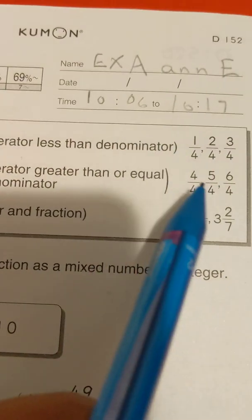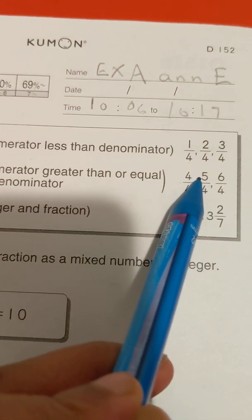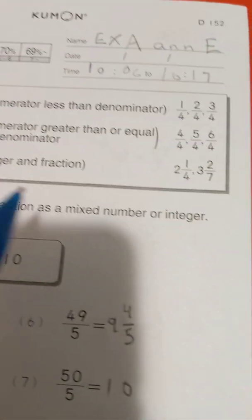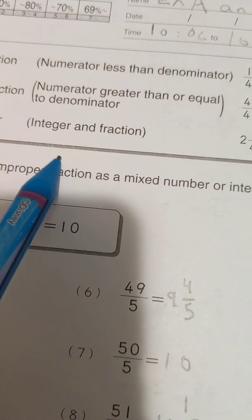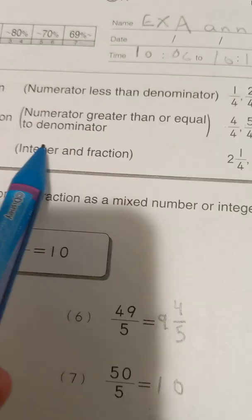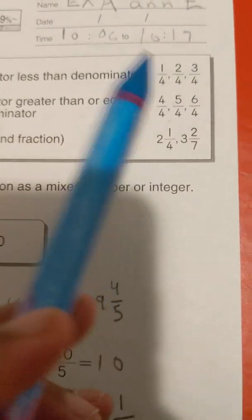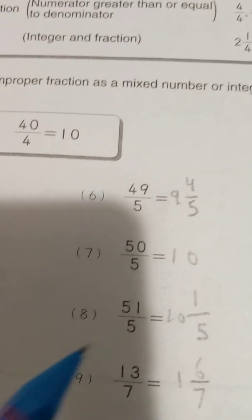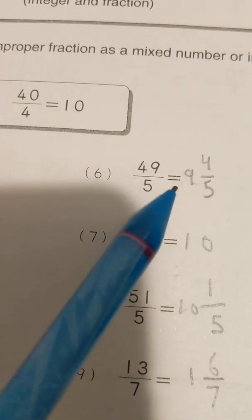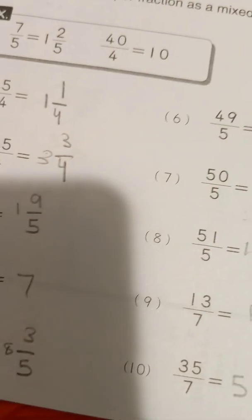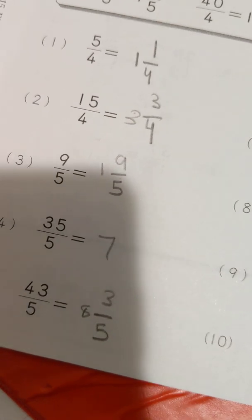An improper fraction is when this number is equal or this number is higher than the bottom number, which is the denominator. And a mixed number would be like an integer and fraction, which would be this. This is a mixed number. These are mixed numbers. These are improper fractions. And a proper fraction I can't find on this page.